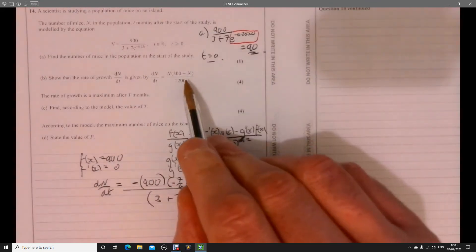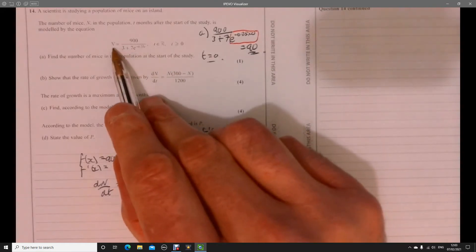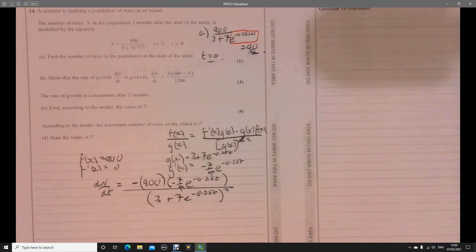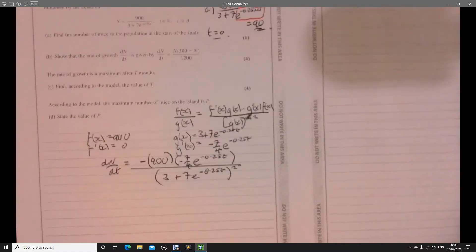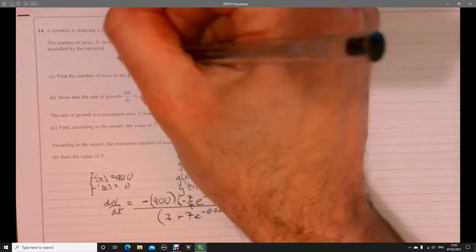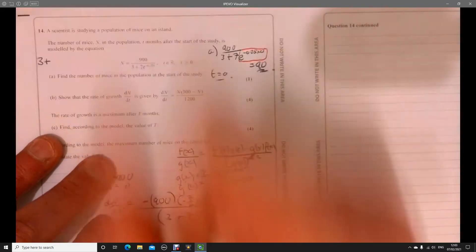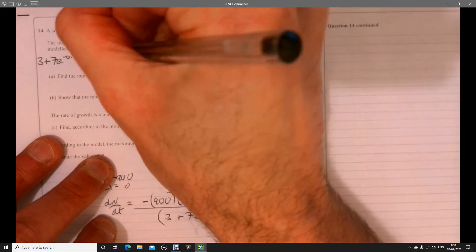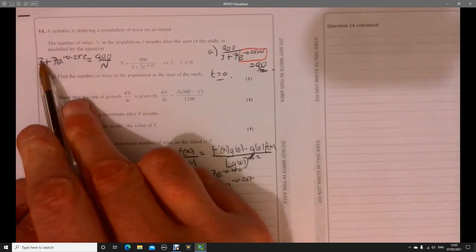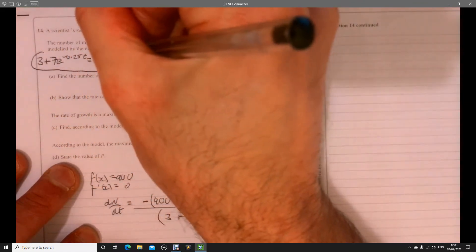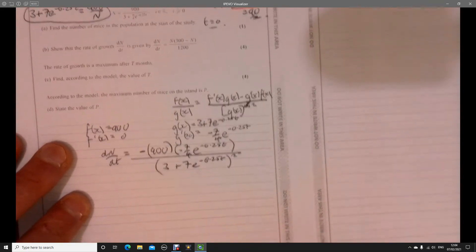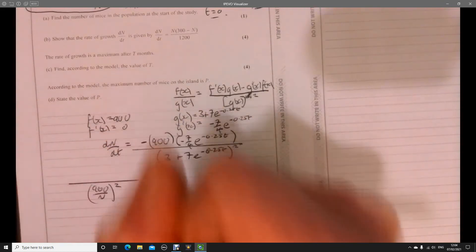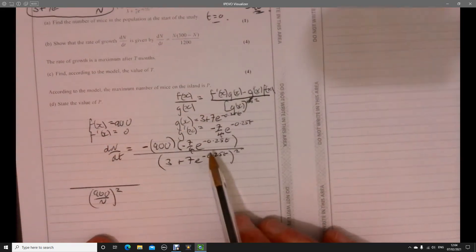Where do we go from here? We need to go back to this up here because I want to write it, look, it's got n in it. So let's start rearranging this, trying to think about how we write 7e to the minus 0.25t. Let's begin to swap these two guys around. So we could write 3 plus 7e to the minus 2.5t equals 900 over n. I could also take away 3 from both sides. Look, I'm going to rewrite the denominator, replace that there with 900 over n squared.